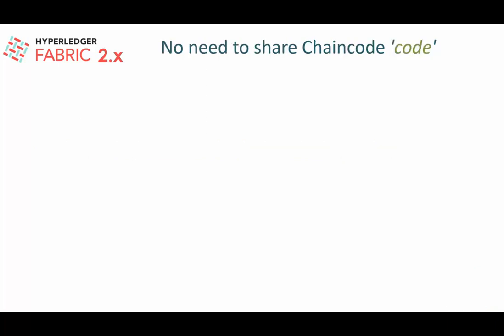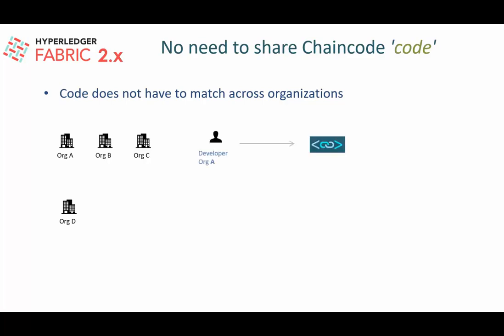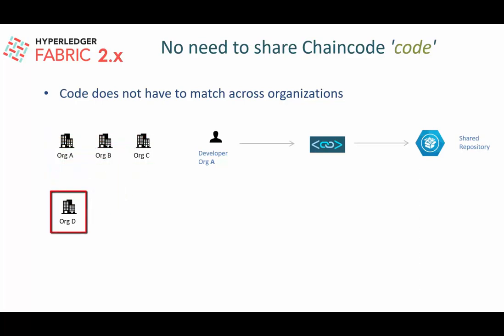In Fabric 1.x, the chaincode code was shared by all members on the channel. In Fabric 2.x, that is not a requirement — the code does not have to match across organizations. For example, if there are four members on a channel and organizations A, B, and C have decided to share the chaincode, a developer from one of those organizations can implement it, put it in a shared repository, and all three members can pick it up and deploy it to their peers. Organization D, however, may have specific requirements not met by that shared code.